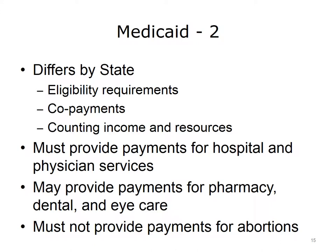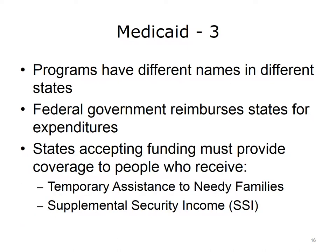States must provide payments for hospital and physician services. They may provide payments for pharmacy, dental, and eye care. No state may provide payments for abortions. Medicaid programs have different names in different states — examples include BadgerCare Plus in Wisconsin and Medi-Cal in California. States are reimbursed by the federal government for their Medicaid expenditures. States that accept Medicaid funding must provide coverage to families and individuals who receive assistance under Temporary Assistance to Needy Families and Supplemental Security Income, or SSI.